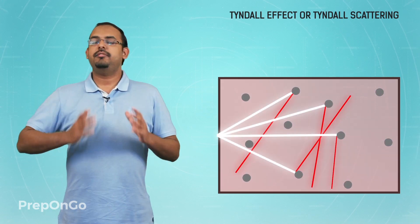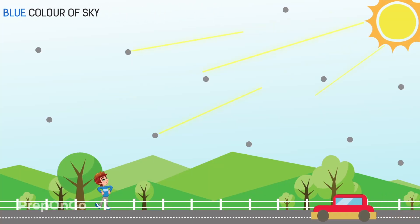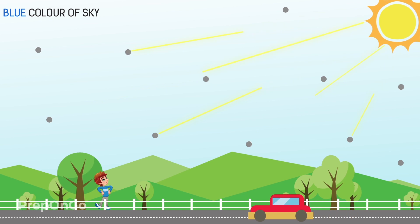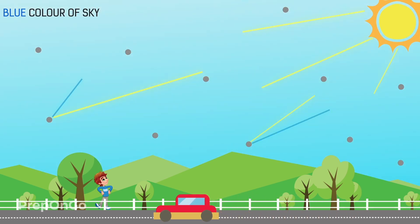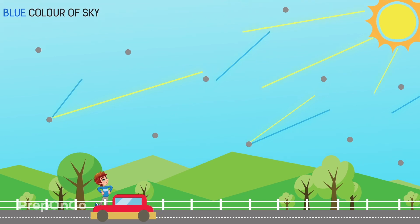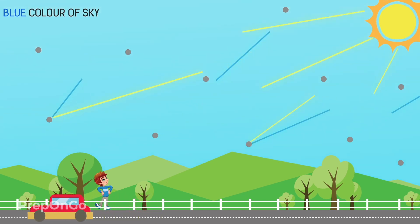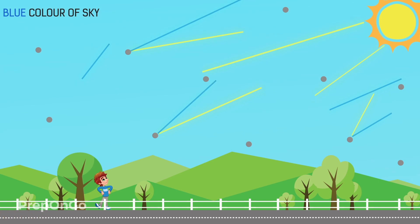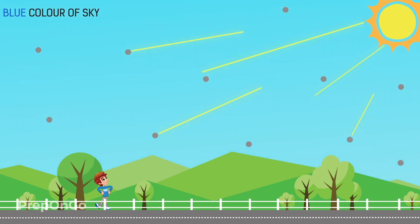When we talk about the color of the sky, the reason why the sky appears blue in daytime is that sunlight coming towards us gets scattered by the fine particles present in the atmosphere. As blue light scatters the most by these finer particles, the sky appears to be blue to us.